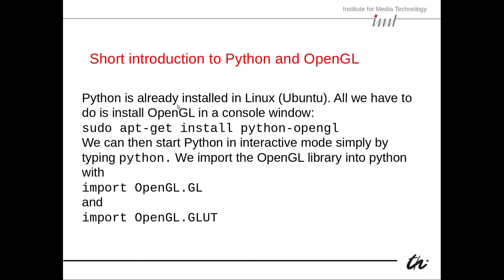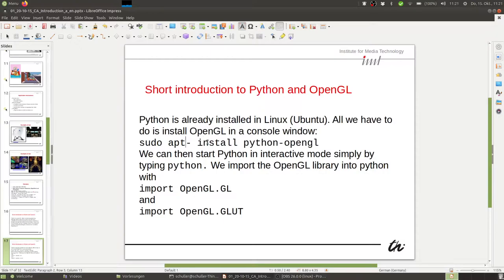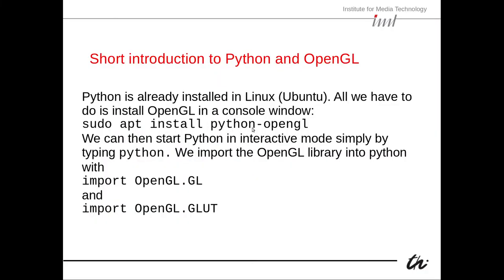To install a new module or library like OpenGL in Linux, it's very easy. You just need to open a terminal shell or console window — in Ubuntu you can use the shortcut Alt+Ctrl+T, or find the terminal in the program menu. Inside this window, type 'sudo apt install python-opengl' and that installs the desired package.